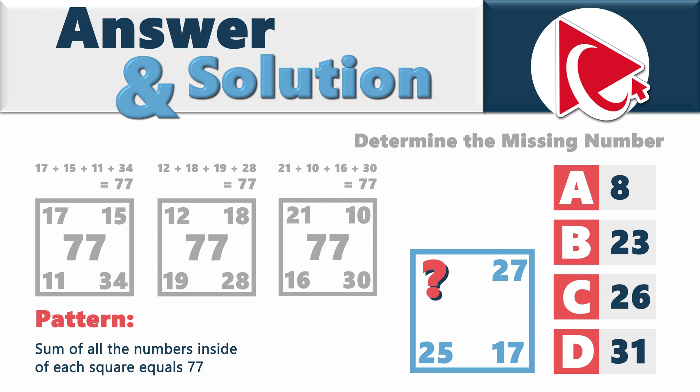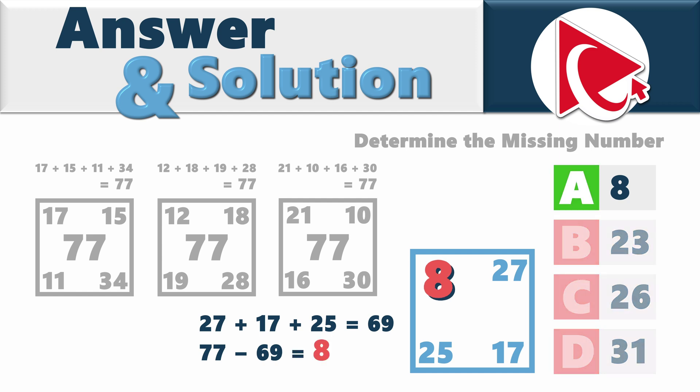We need to do calculations a little differently here. 27 plus 17 plus 25 equals 69. 77 minus 69 equals 8. So the correct answer here is choice A8.